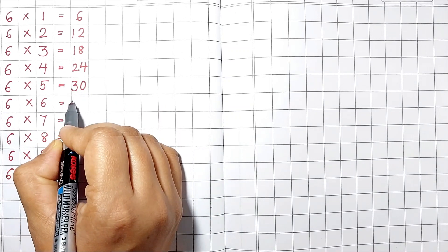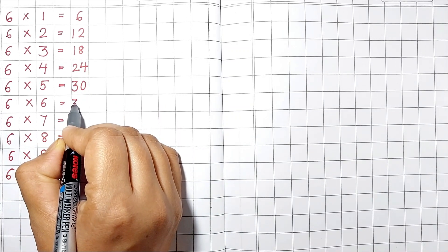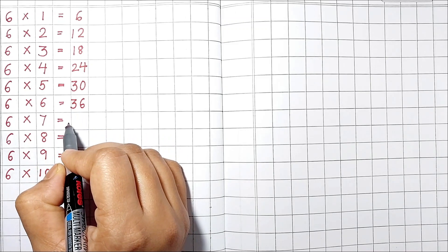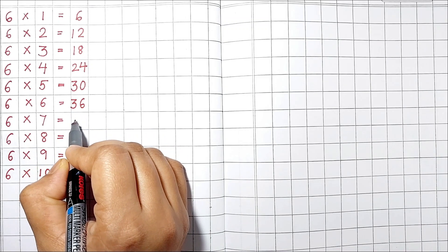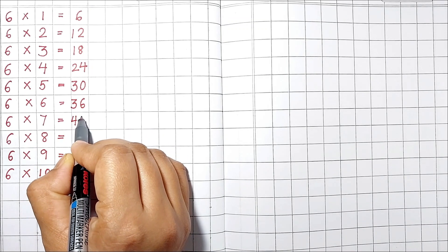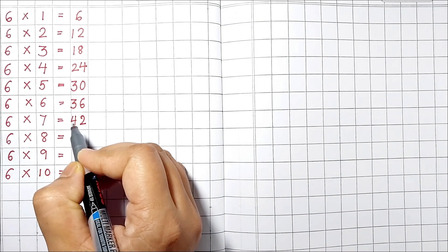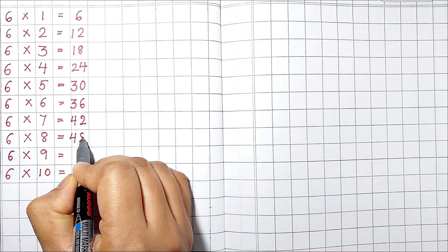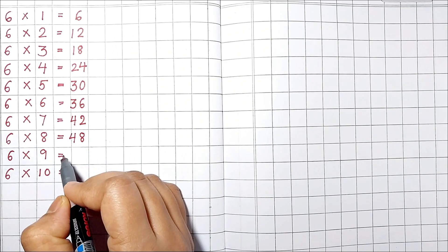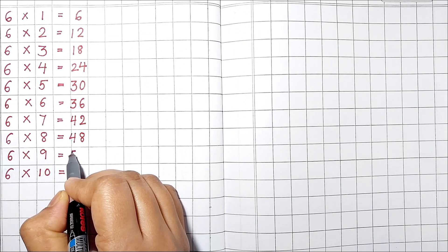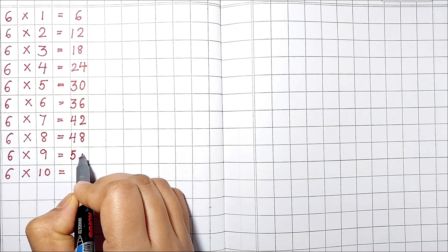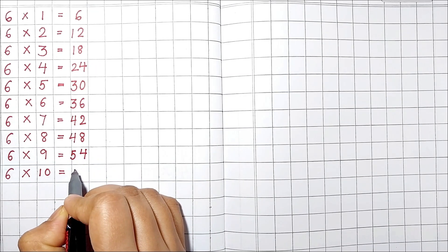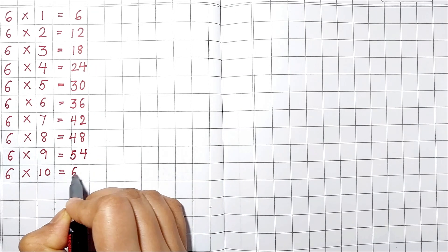6 6's are 36. 6 7's are 42. 6 8's are 48. 6 9's are 54. 6 10's are 60.